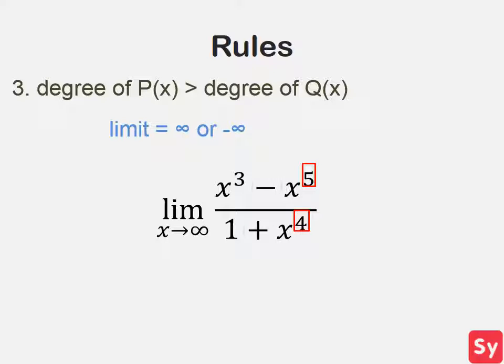So we'll go ahead and look at their signs. We have a negative over a positive. This means the limit is negative infinity.